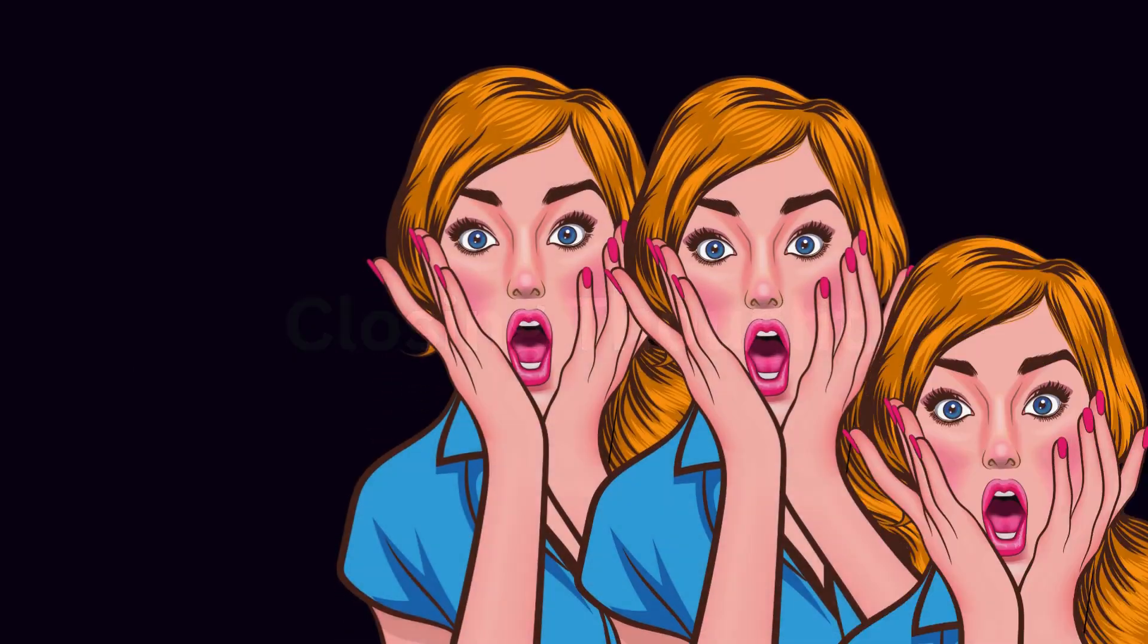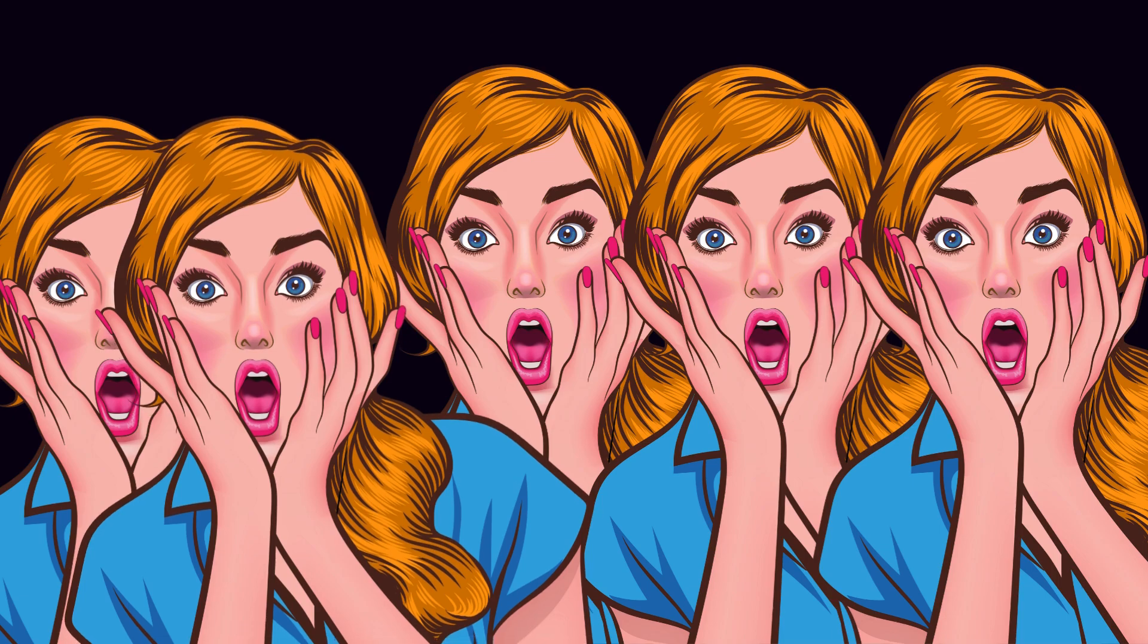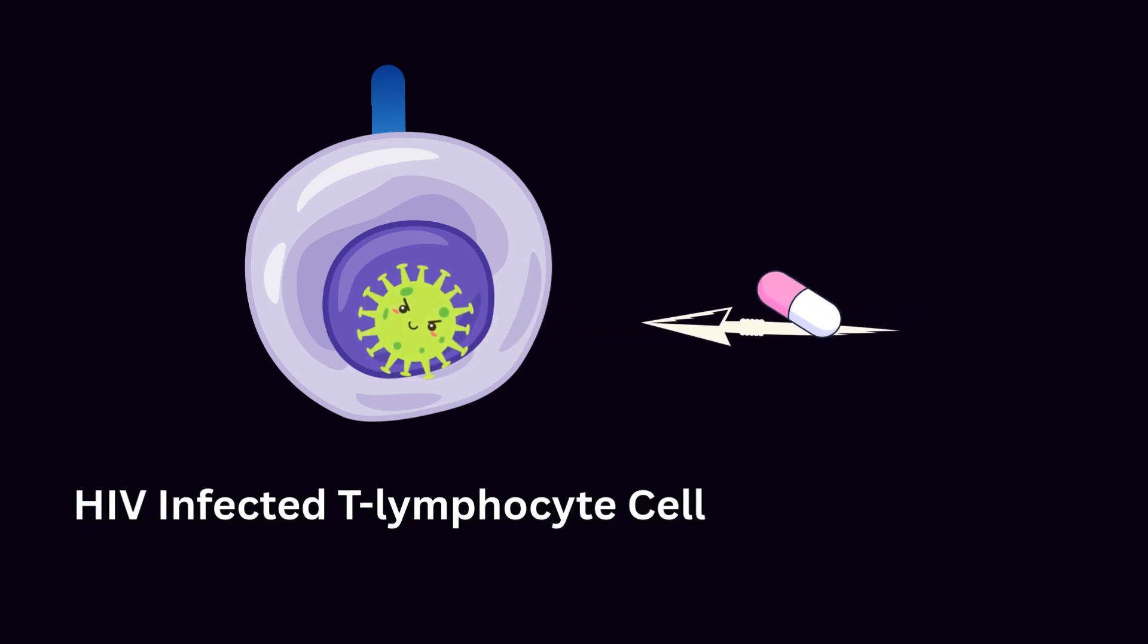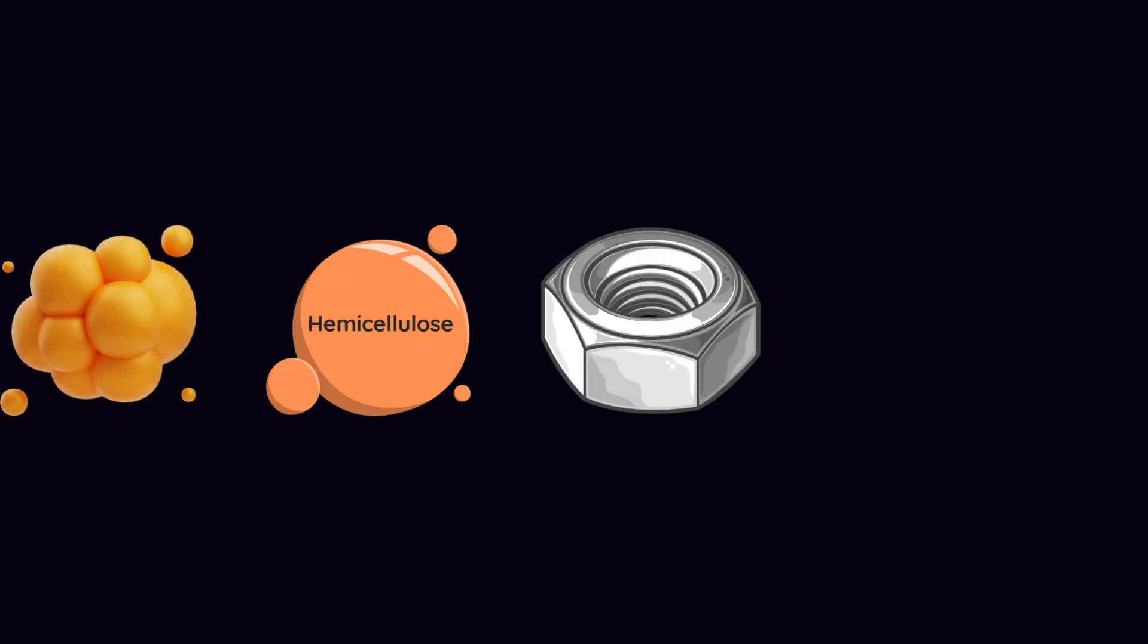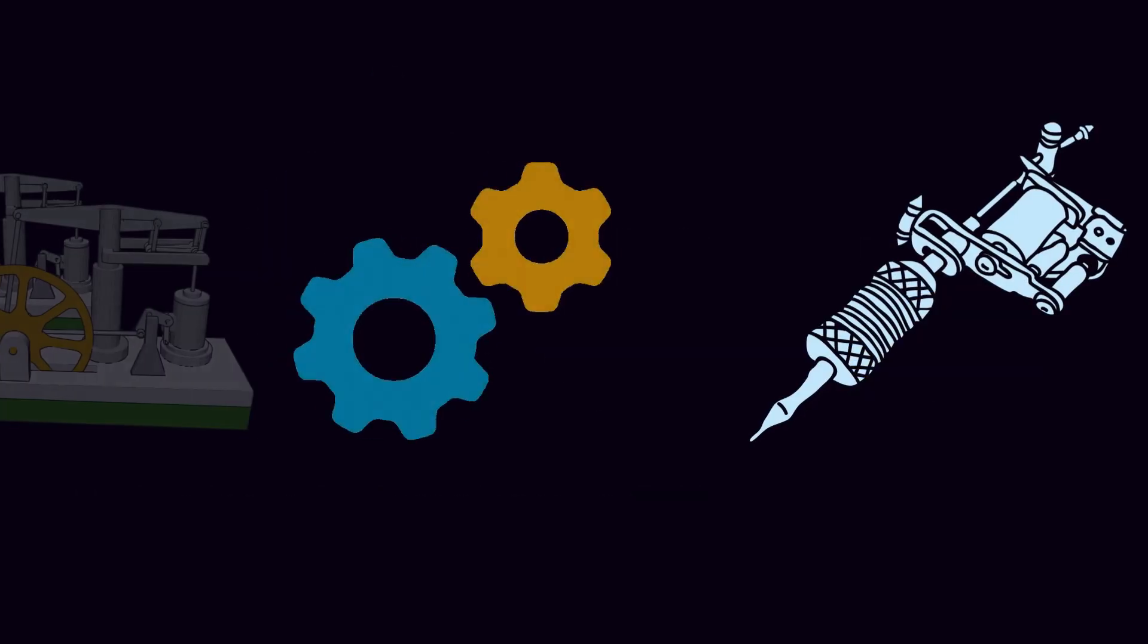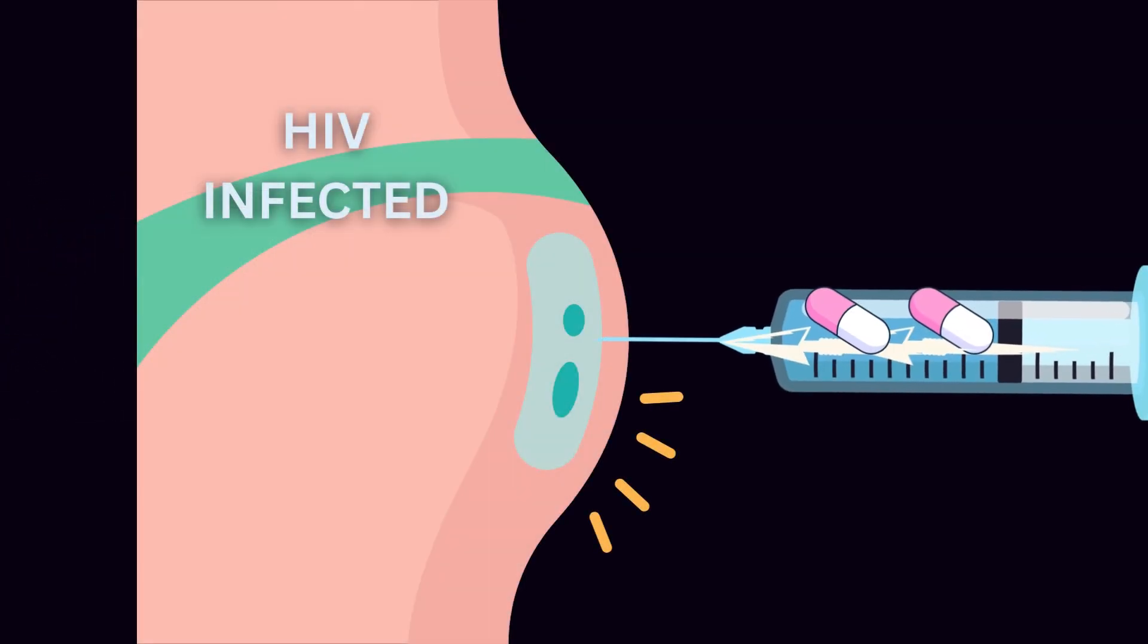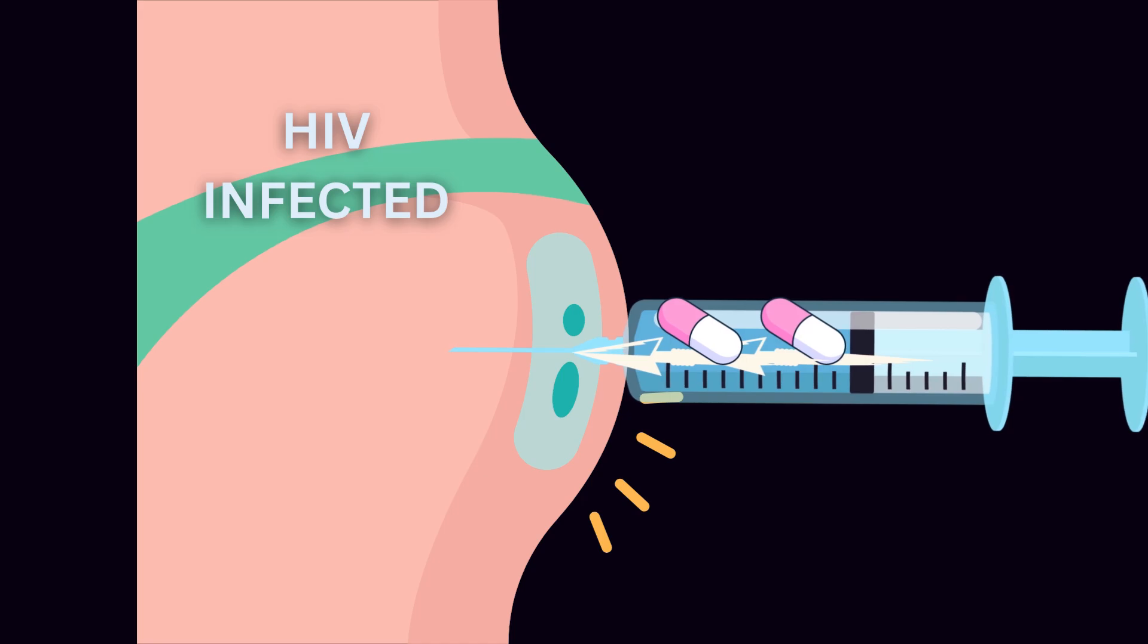Closing thought: HIV taught the world how clever a virus can be. Nanotechnology is teaching us how precise science can become. If the two meet in battle, the fight might finally shift in our favor—not with bigger weapons, but with smaller ones. And maybe, in the smallest machines we've ever built, we'll find the power to end one of the biggest epidemics we've ever faced.